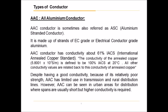AAC, all-aluminium conductor. AAC conductor is sometimes also referred to as ASC, aluminium stranded conductor. It is made up of strands of EC grade, or electrical conductor grade, aluminium. AAC conductor has conductivity about 61% IACS — International Annealed Copper Standard. The conductivity of annealed copper is defined to be 100% IACS at 20 degrees Celsius, and all other conductivity values are related back to this conductivity of annealed copper.